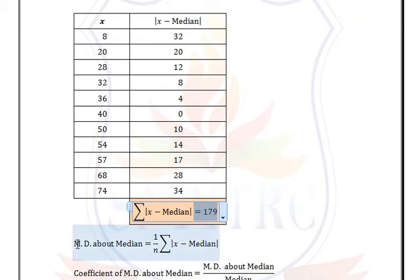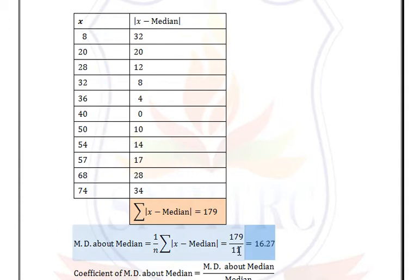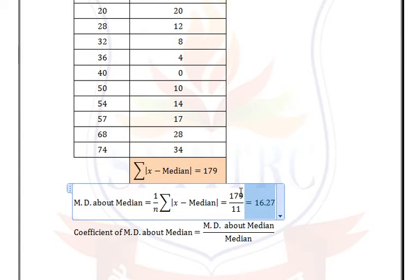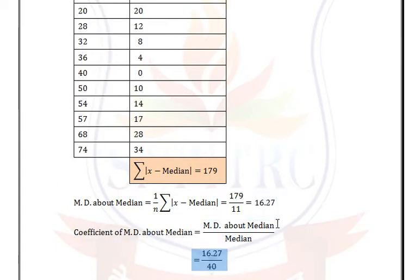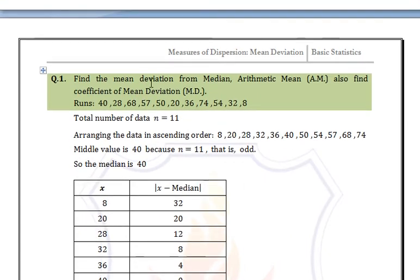We add all these absolute values, giving a summation of 179. Substituting into the formula: mean deviation about median = 179/11 = 16.27. The coefficient of mean deviation about median = mean deviation / median = 16.27 / 40 = 0.41.